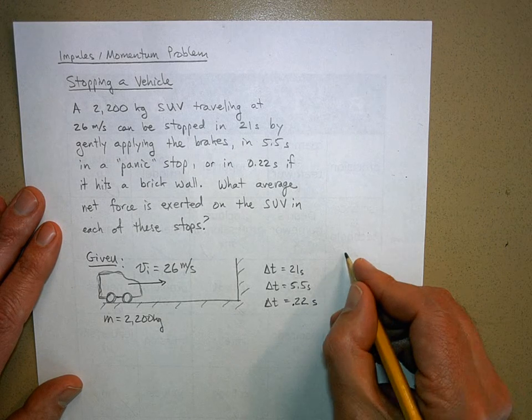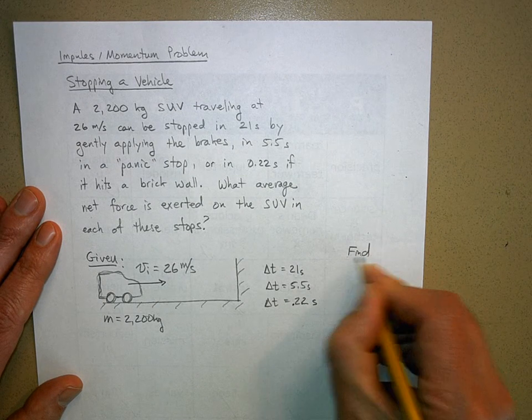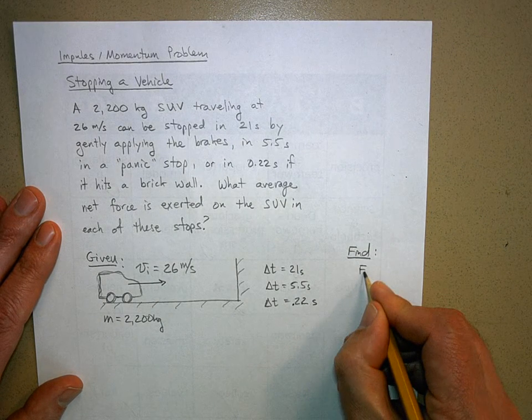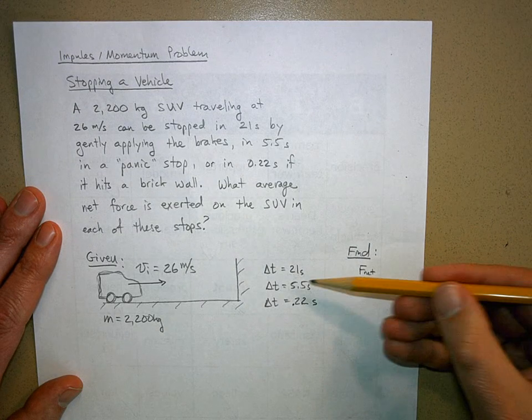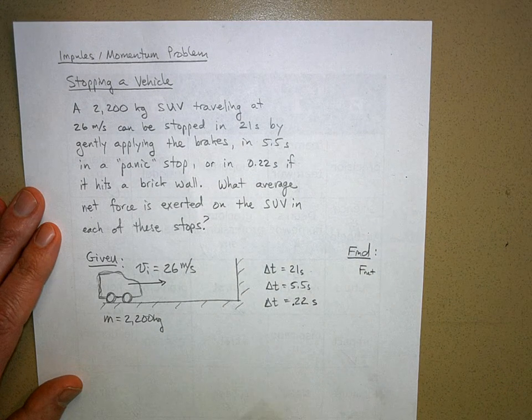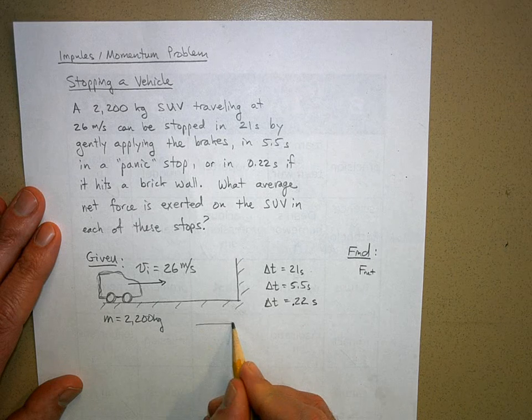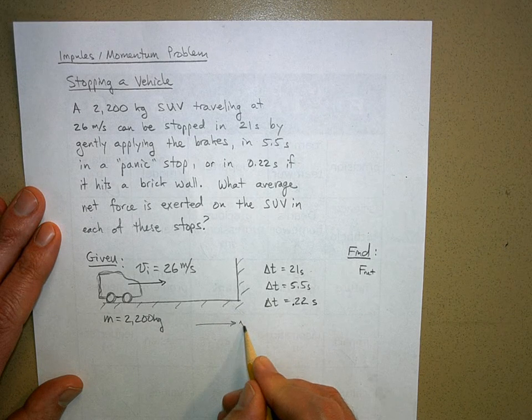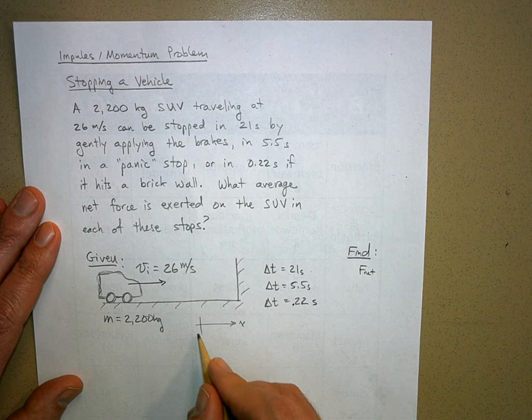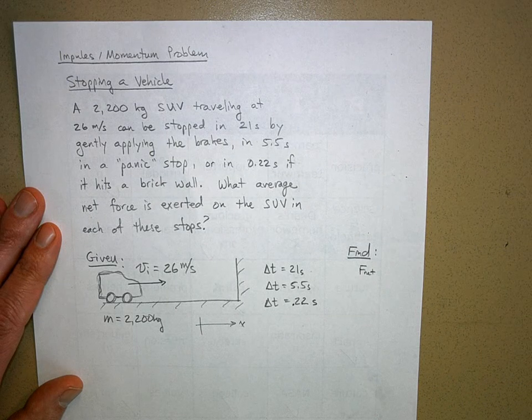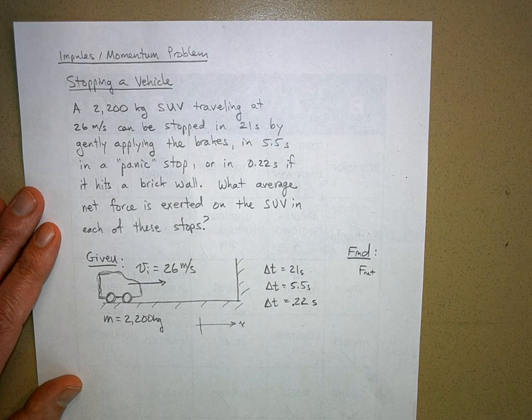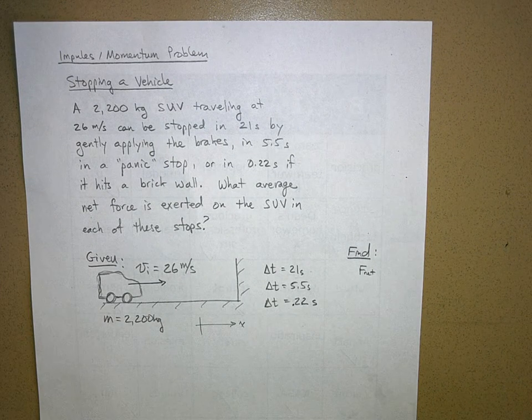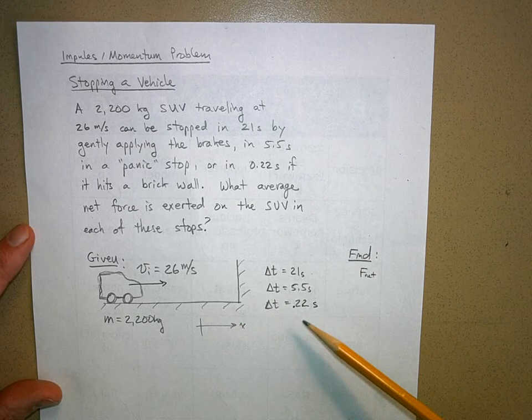What are we trying to find? We want to find the average net force needed to stop in all these cases. We're going to call this the positive x direction, and of course this would be the y direction, but we don't really need the y direction in this problem. So first step: draw a sketch, understand what's given and what you're trying to find.